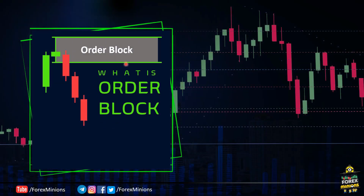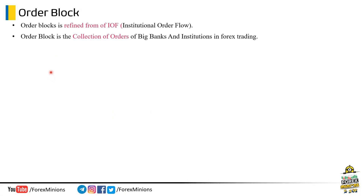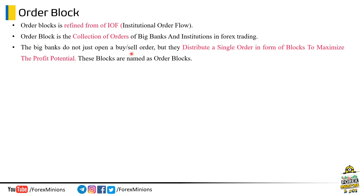Now here comes the most awaited topic — what is an order block? An order block is a refined form of institutional order flow. This is the reason we studied that topic in great detail. Basically, an order block is the collection of orders of big banks and institutions in Forex trading. Big banks do not just open a buy or sell order; they distribute a single order in the form of blocks to maximize profit potential. Distribution means they will stack their orders at multiple levels to get premium and discounted prices accordingly. These distributed blocks are named as order blocks.